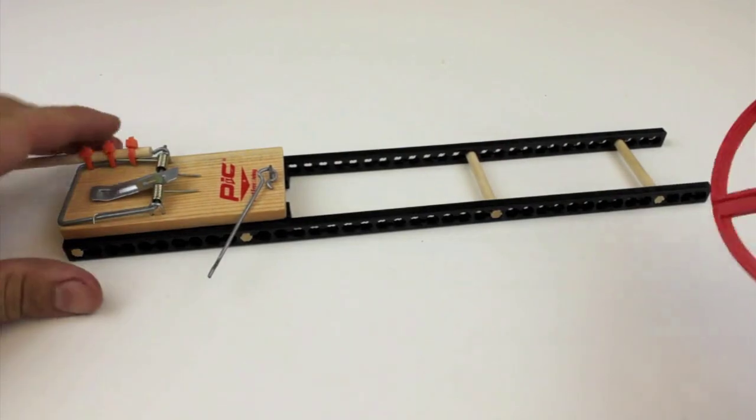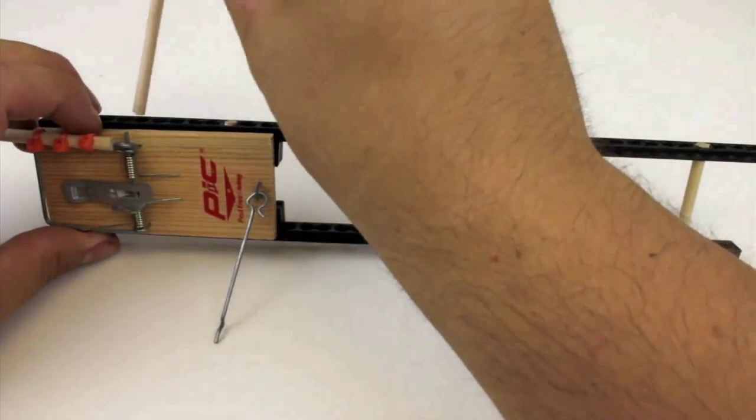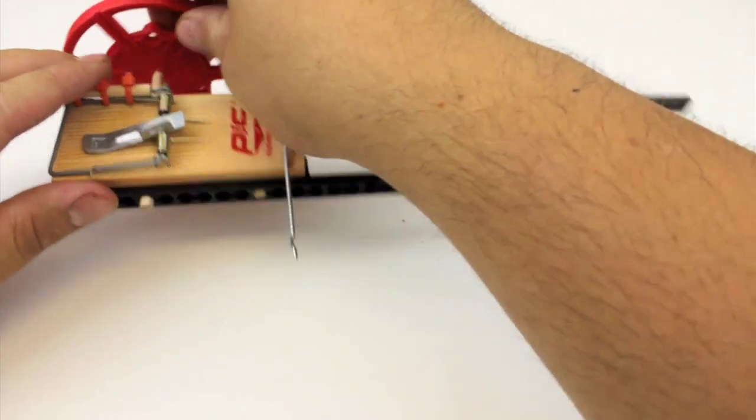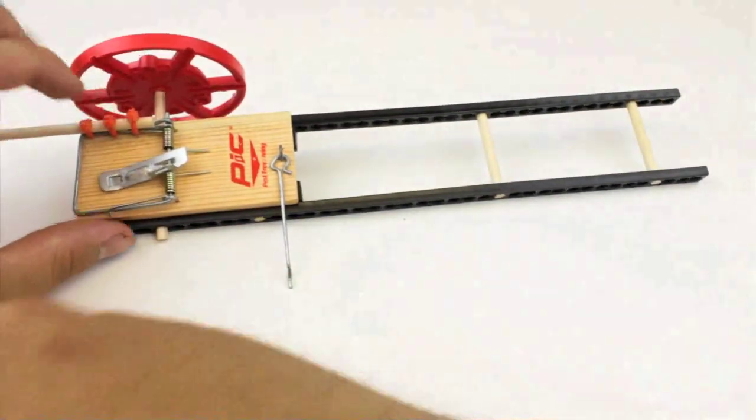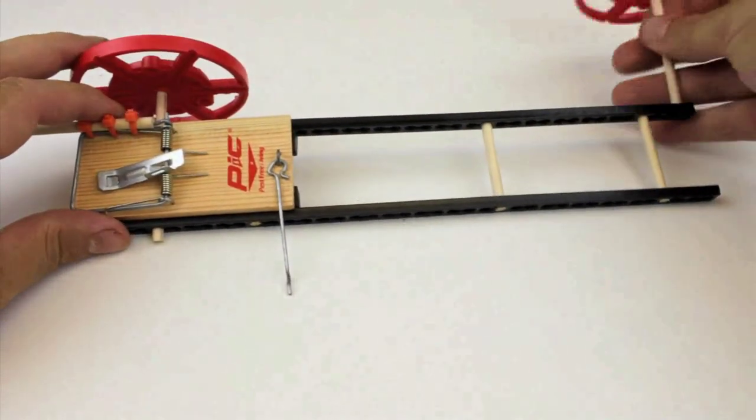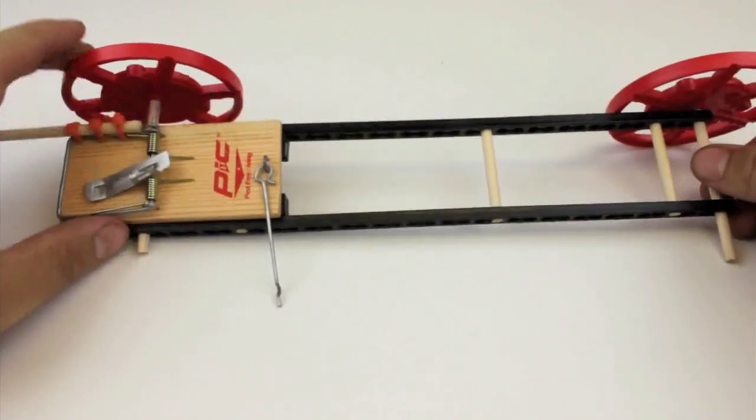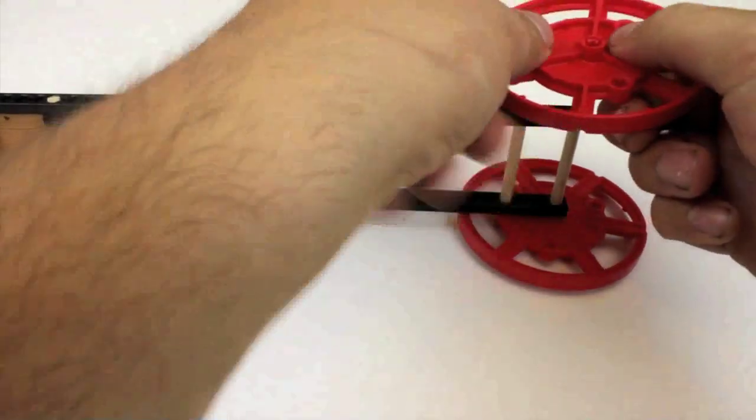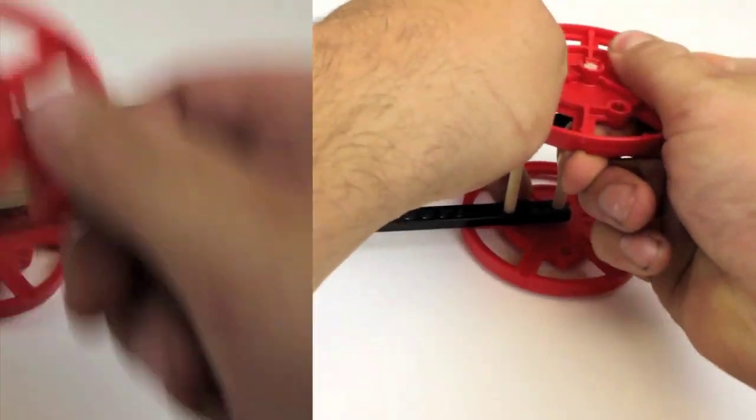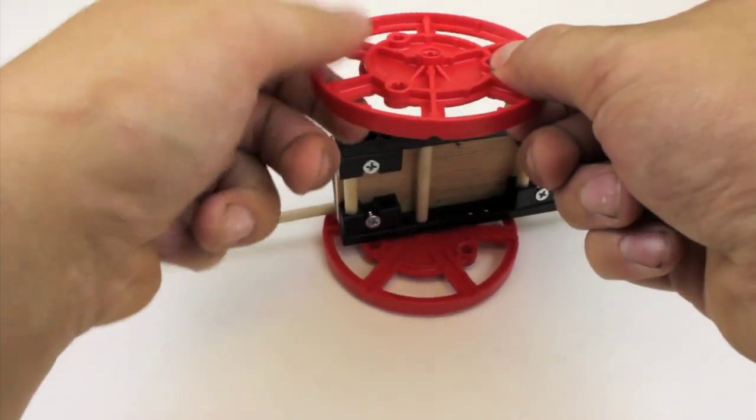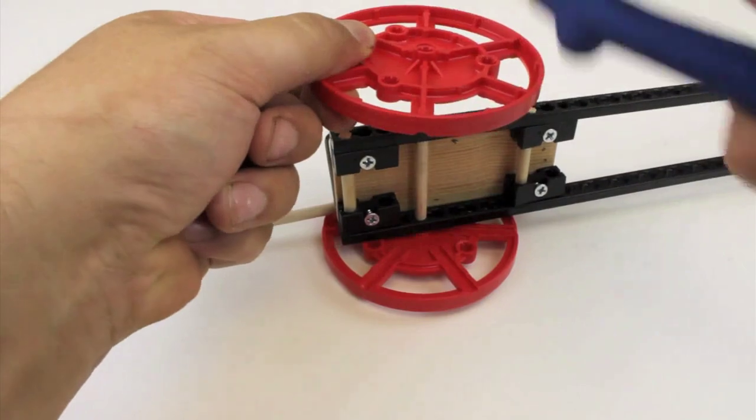Take the dowels with the wheels on them and place them through the holes in your frame that you reamed out. Now place another wheel on the other end of the dowel. If it is a little tough to push on, you can tap it with a pair of easy cutters.